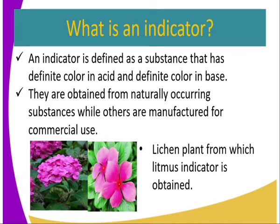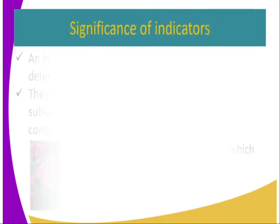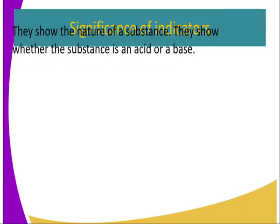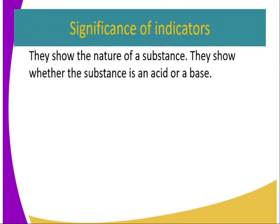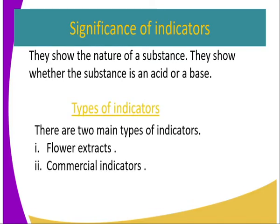The ones which occur naturally, for instance, may include rich plants from which a natural indicator is obtained. What is the significance of having indicators? They show the nature of a substance — that is, they show whether the substance is an acid or a base.